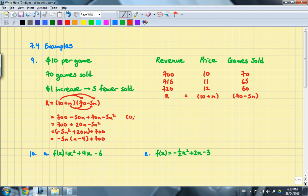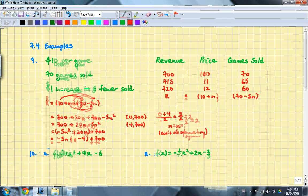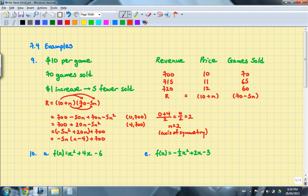So I can see that there are two points of the same height, and they will be (0, 700) and (4, 700). Therefore, to find the middle of these, I have 0 + 4 divided by 2, and that's 4 over 2, which is 2. So N is equal to 2 for our axis of symmetry, so to speak, which is going to tell us how many increases it's going to take to get the maximum revenue, which is 2.